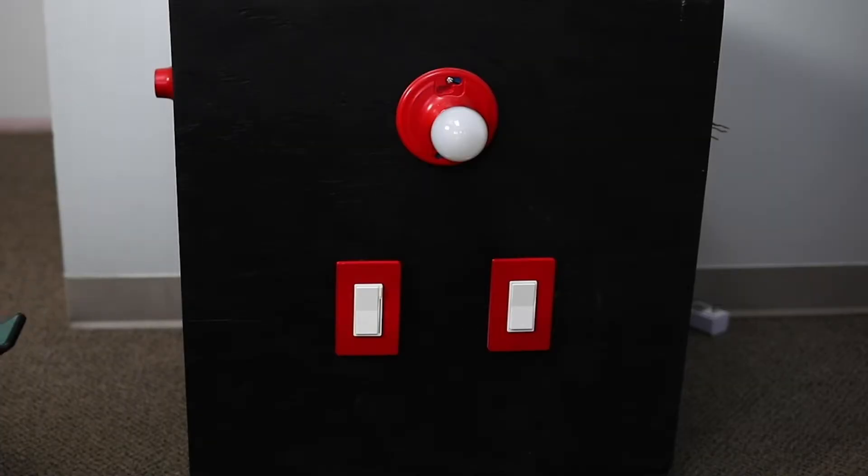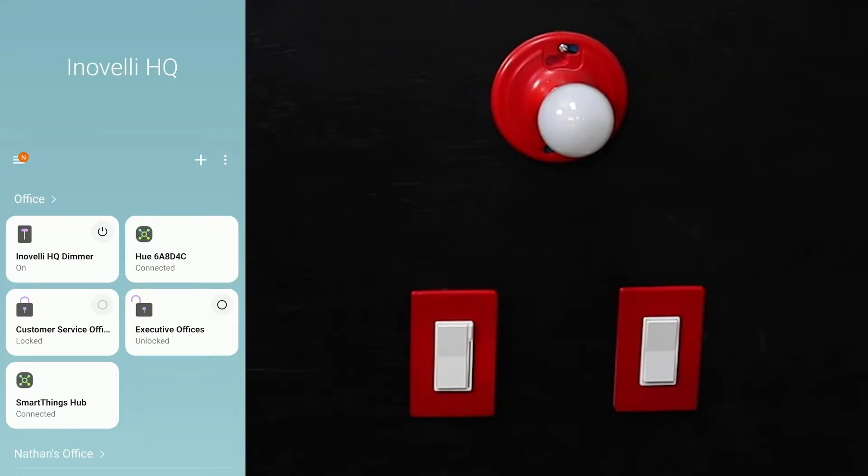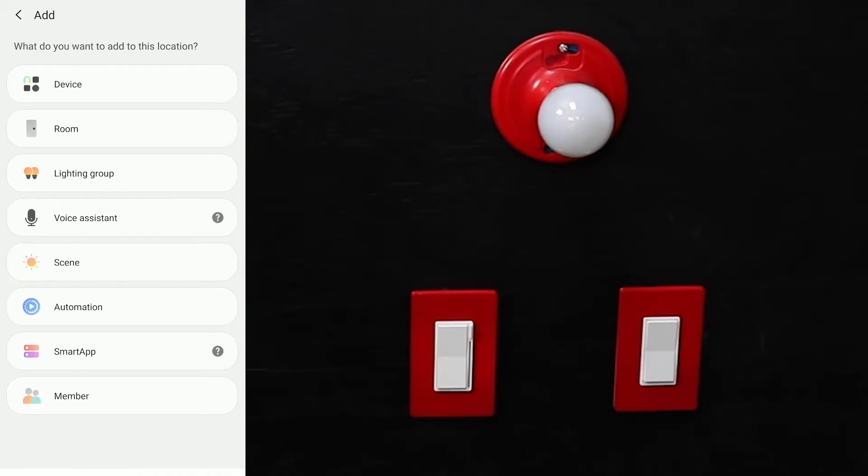Alright, so today we're going to be pairing the Black Series dimmer switch with SmartThings using the new app. It's real simple - we're going to open up the app and click on the plus button at the top right, then click on device.